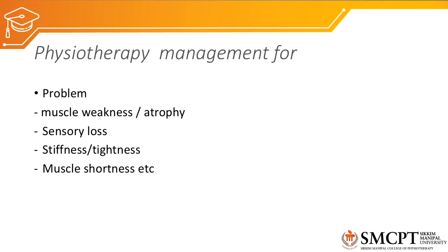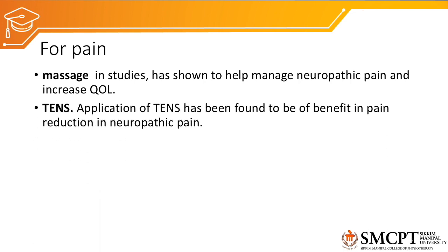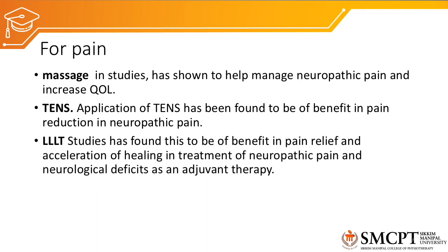For management of femoral nerve injury, the main goals of physiotherapy are to maintain strength of the muscles and to prevent muscle weakness and atrophy. Because sensory loss is present, we have to stimulate the sensory function of the nerve. Stiffness and tightness may be complications of femoral nerve injury — stiffness of the knee joint and hip joint due to lack of mobility. To prevent stiffness and tightness, we can perform stretching, passive range of motion exercises, and joint mobilizations. For pain, massage, TENS, low-level laser therapy, and relaxation therapy are some techniques to reduce pain.